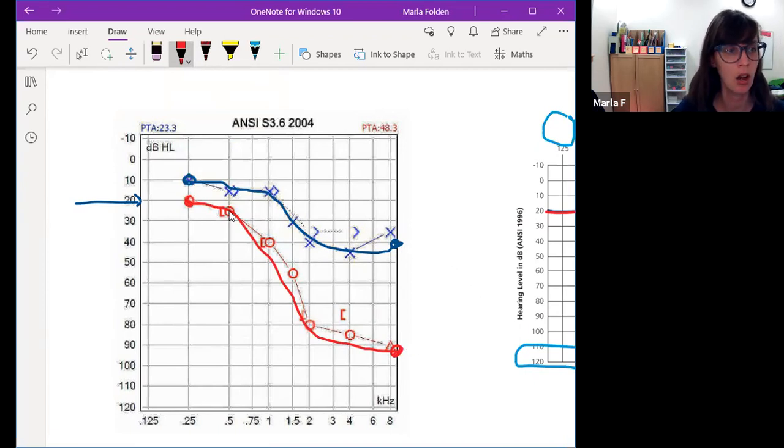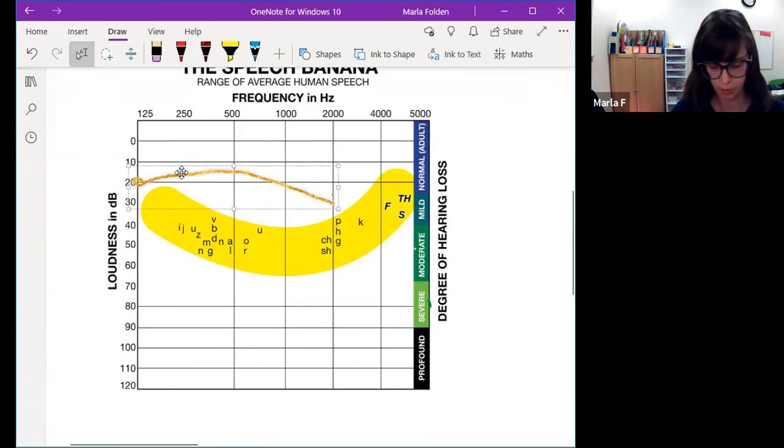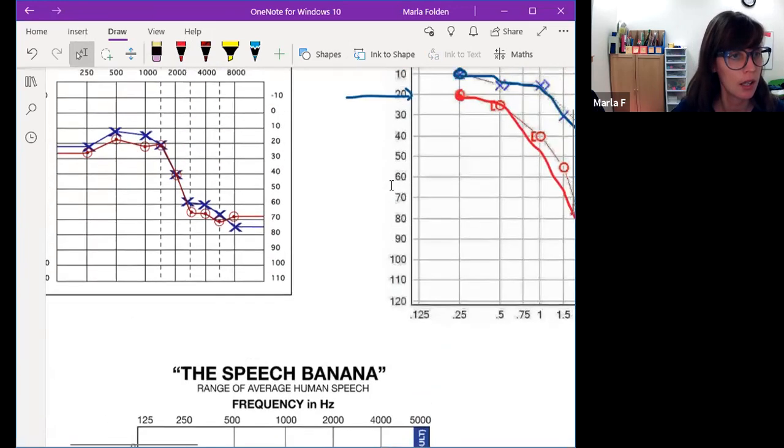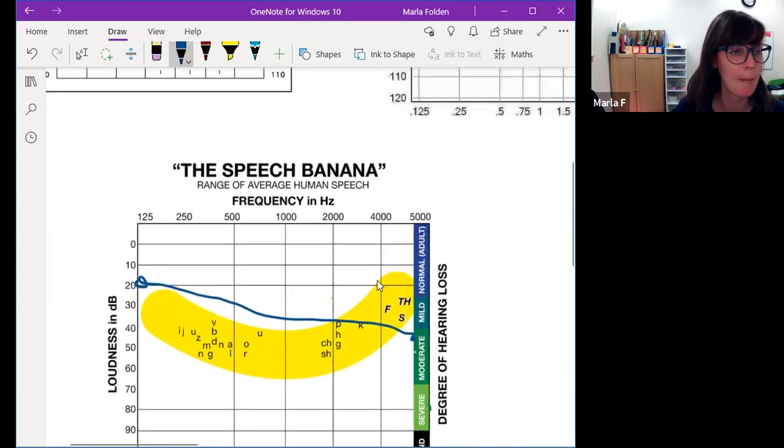I'm going to overlay these onto what we call the speech banana. When we think about speech sounds, they kind of fall into this arc right here. This guy started with normal hearing on the left, around 20, and it dipped down to about 40, 45. So we're going to connect our dots. Everything above this line, that person can't hear. That's important to know. If you're working on the S, the S, the TH sound, and their line, their audiogram line is here, they can't hear you when you do that, especially if they don't have a hearing aid.